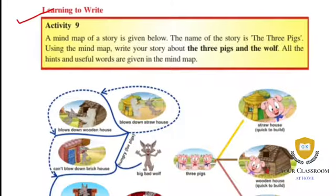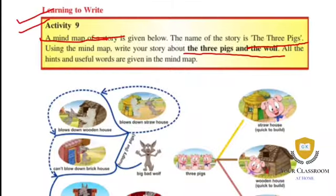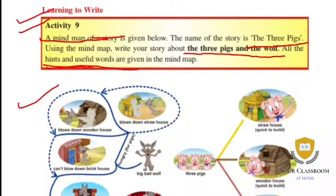Learning to Write — Activity 9. Written practice, Activity 9: A mind map of a story is given below. The name of the story is The Three Pigs. Using the mind map, write your story about The Three Pigs and the Wolf. The mind map shows hints and useful words.